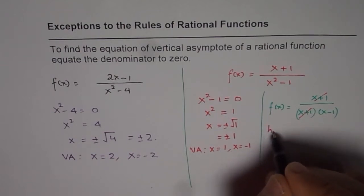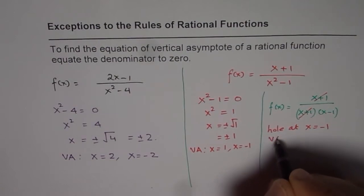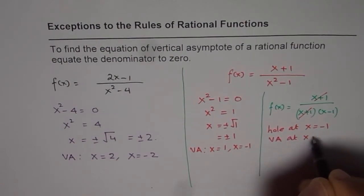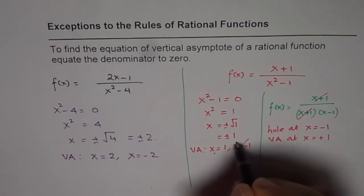So, we actually have hole at x equals minus 1 and vertical asymptote at x equals plus 1. Not at both the points. So, this one is incorrect.